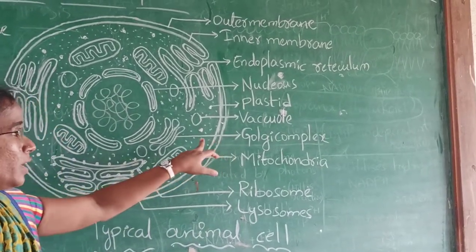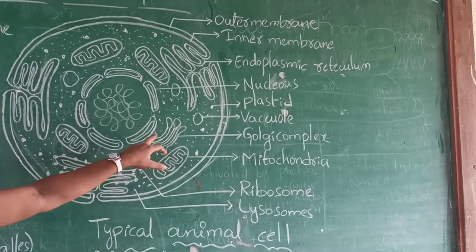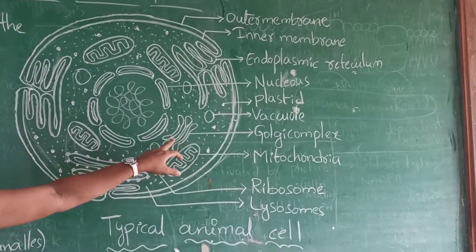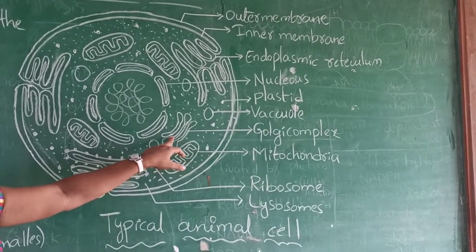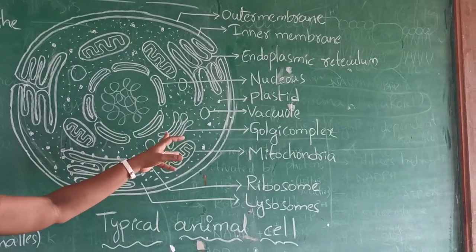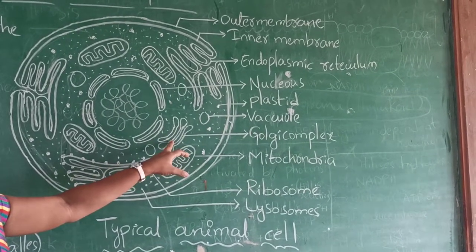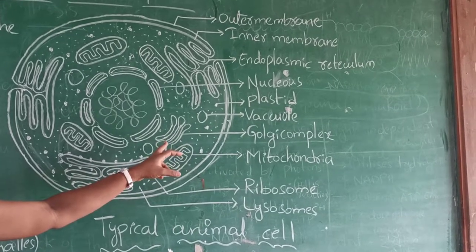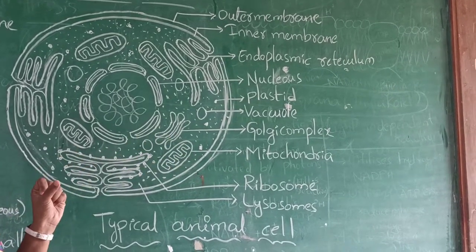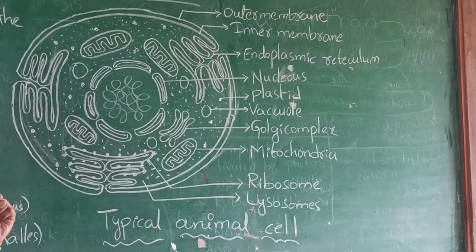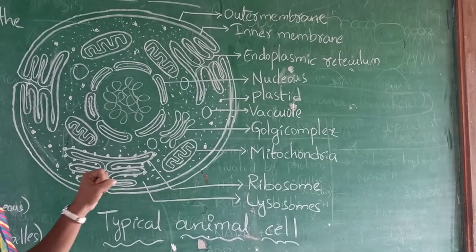We have Golgi complex. Camillo Golgi is a scientist who invented the Golgi complex. He observed the Golgi complex in a cell first time. This Golgi complex is a fluid satellite structure. It stores the material before transported to the other organelle.